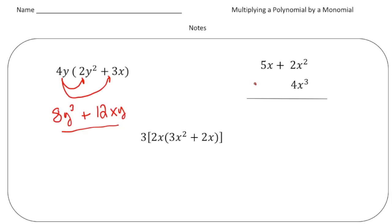And we're going to multiply that times 5x plus 2x squared. And what you do is you multiply the 4x cubed times the 2x squared, and that will be an 8x to the fifth. And you add to that the 4x cubed times the 5x, which will give us 20x to the fourth power.